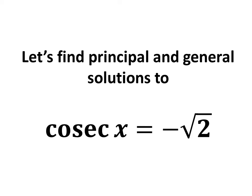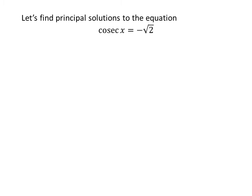In this video, we will learn to find the principal and general solutions to the equation cosecant of x is equal to minus square root of 2.